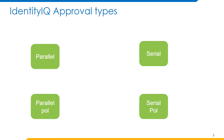Out of the box, IdentityIQ provides several approval types in the LCM provisioning workflow that decide the type of approval being processed. By default this is serial, since most requests — with the exception of manager transfers — will have only one approver. In the case of a manager transfer, they will have the manager and new manager as approvers. Let's discuss the different approval types.